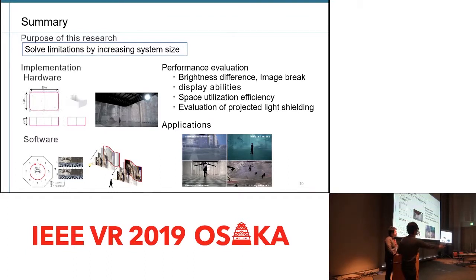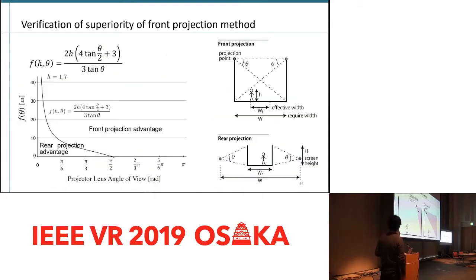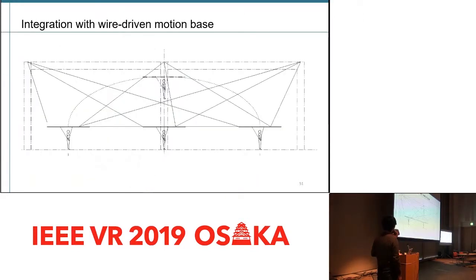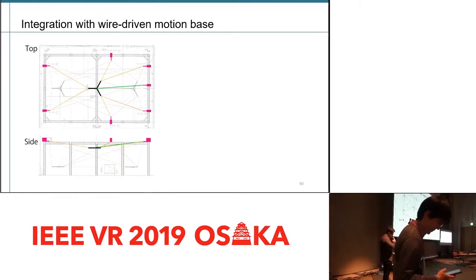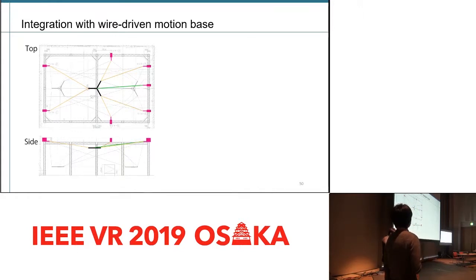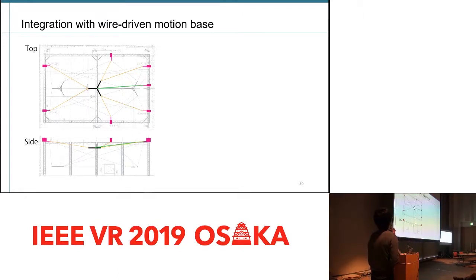Does this harness mean someone can fly around, like off the ground? Yes, thank you — nice question. This is an integration with a wire-driven motion base. If you ride this motion base, you can fly and jump. Yes.